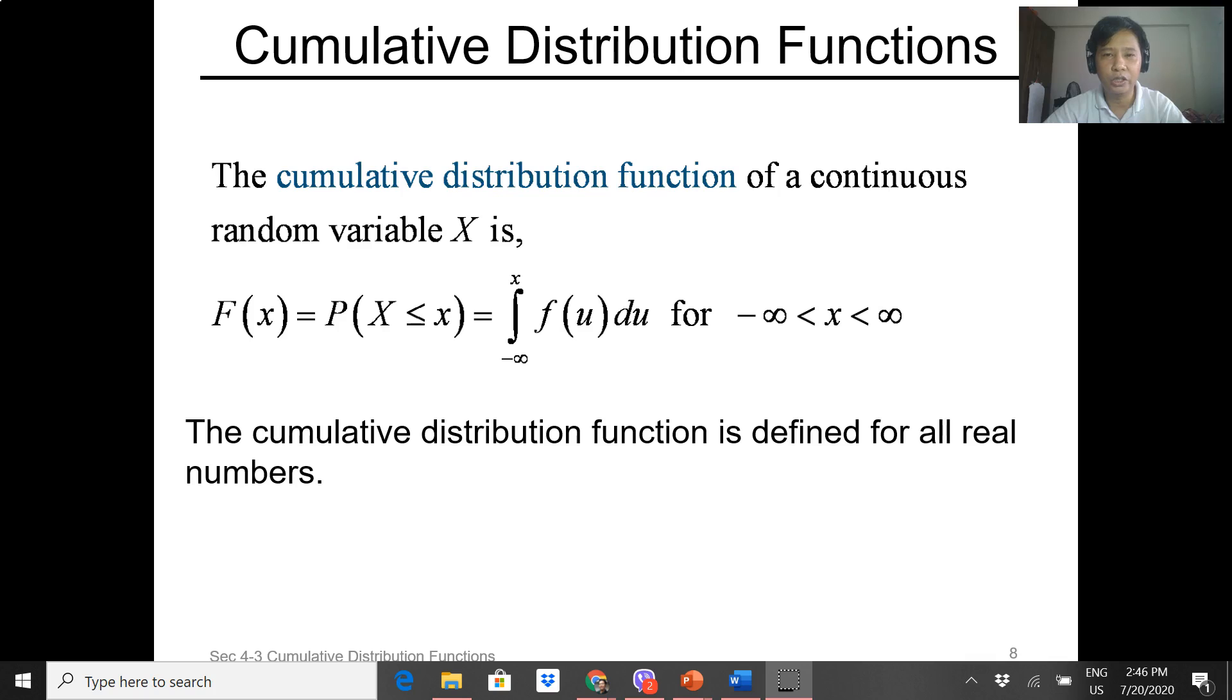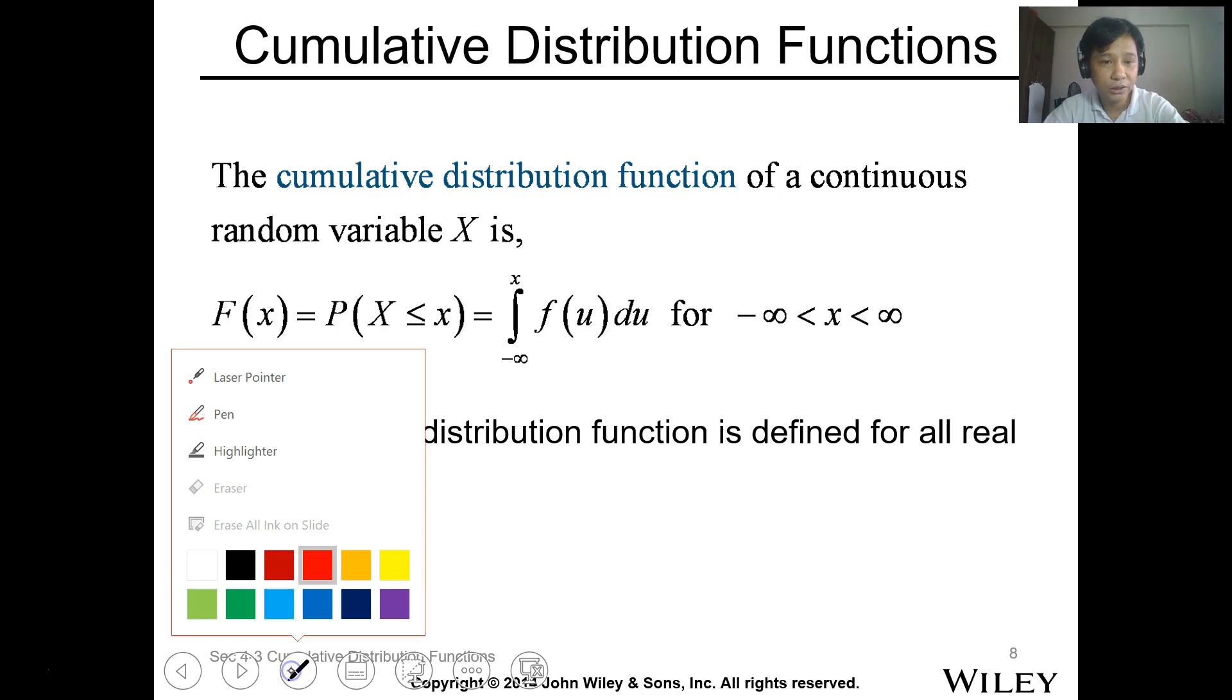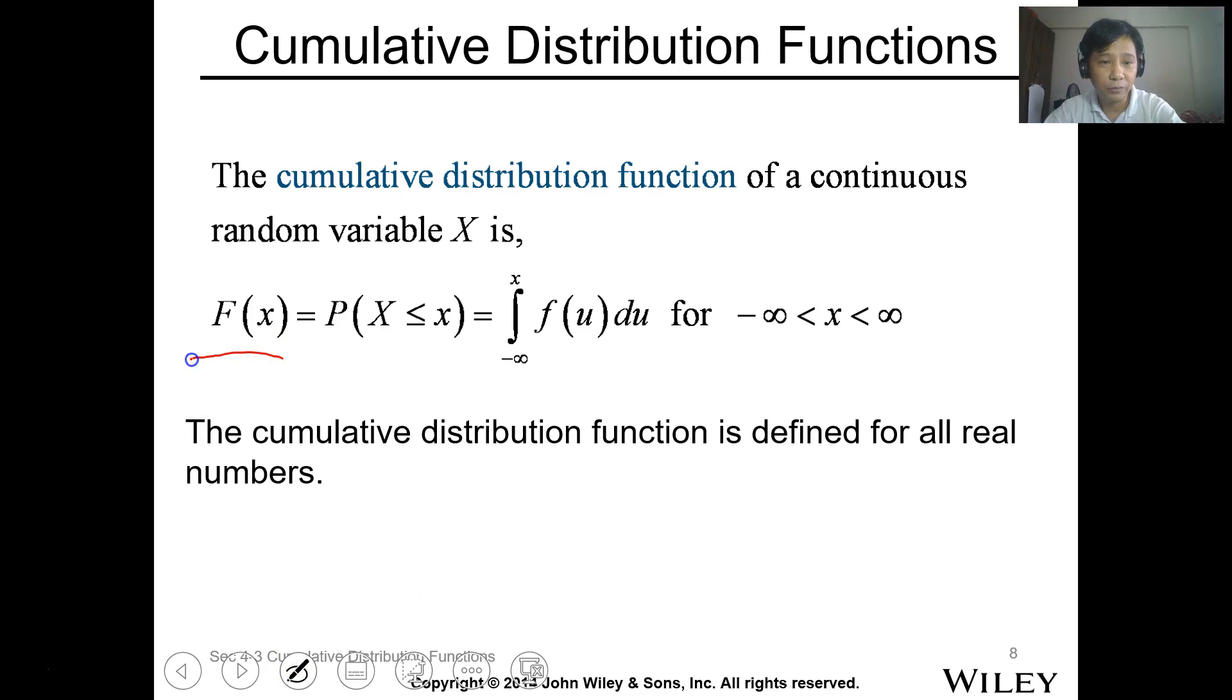The Cumulative Distribution Function of a Continuous Random Variable X is defined as F of X, capital F of X, where this is the probability of X less than or equal to x.